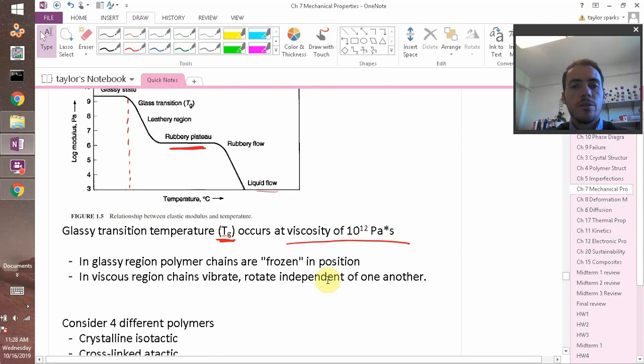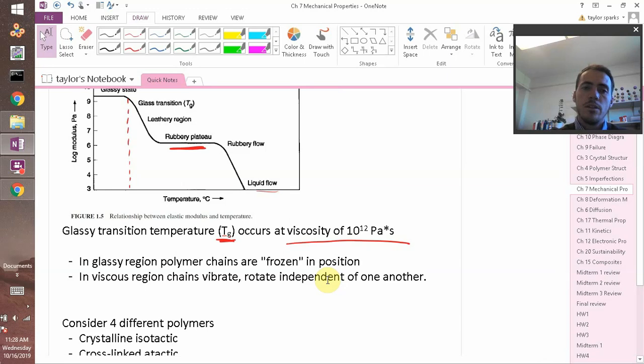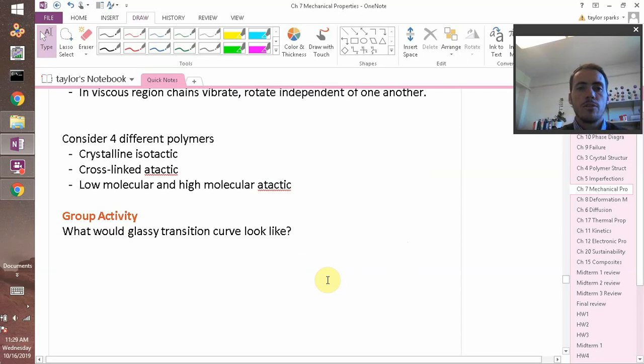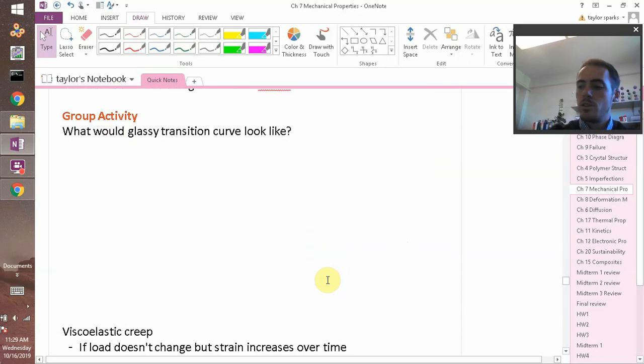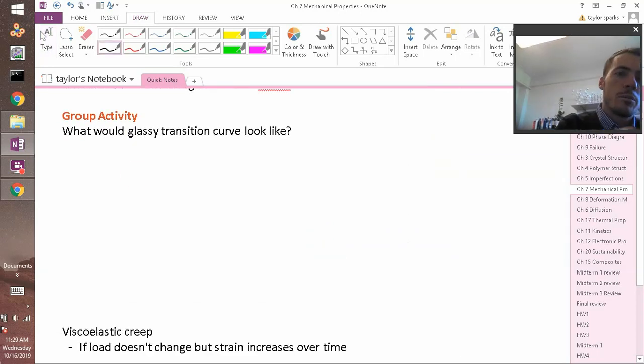So again, in the glassy region, they're frozen in position. The polymer chains can't slide past each other. But if you give it enough temperature, then in the viscous regions, they start to be able to vibrate, rotate, maybe even flow past one another. So let's consider four different polymers, and let's sketch what the glassy transition curve would look like for four different polymers. Down here, this is temperature. This is modulus.